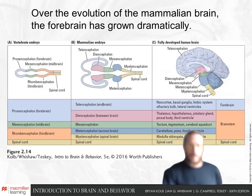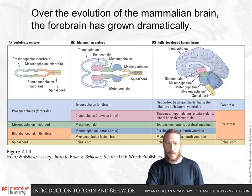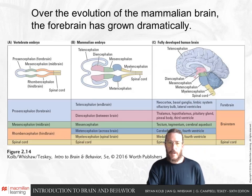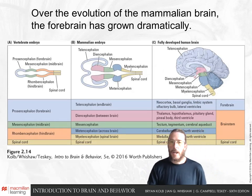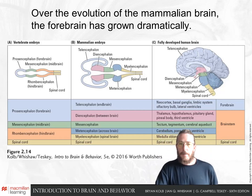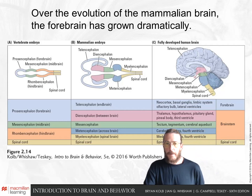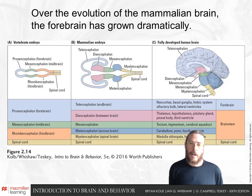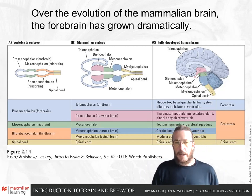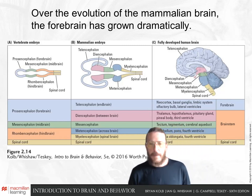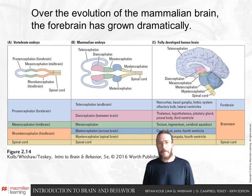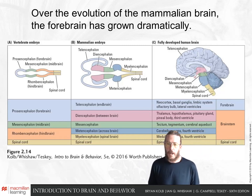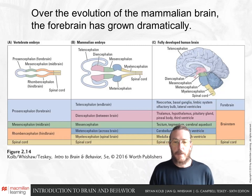Starting as prosencephalon, mesencephalon, and rhombencephalon, the rhombencephalon differentiates into the met- and myelencephalon, and the prosencephalon differentiates into the telen- and diencephalon. A helpful mnemonic: after telencephalon at the top, the remaining divisions — diencephalon, mesencephalon, metencephalon, myelencephalon — are in alphabetical order going down to the spinal cord. We'll touch on nervous system development throughout the course but won't cover that dedicated chapter in detail.